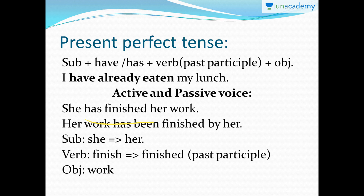One good thing about present perfect tense is that when you put it in passive voice, you don't have to worry about the past participle because it's already in the active voice. All you have to do is introduce the word 'been,' placed between 'has' and the past participle of the verb. So: 'She has finished her work' becomes 'Her work has been finished by her.'